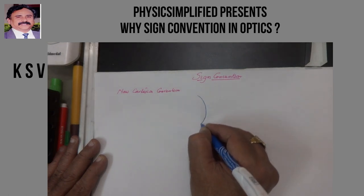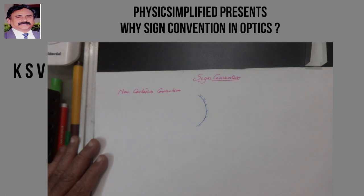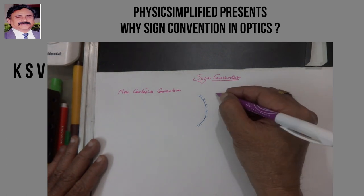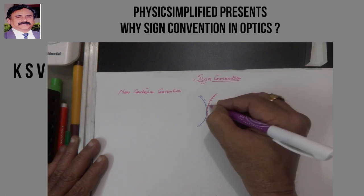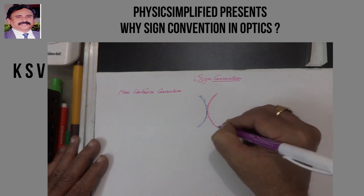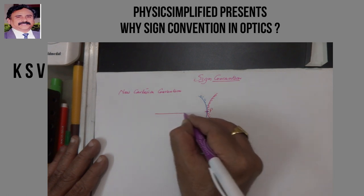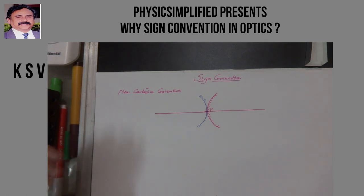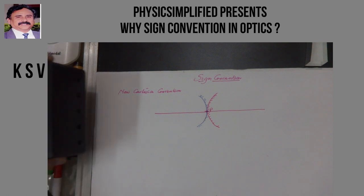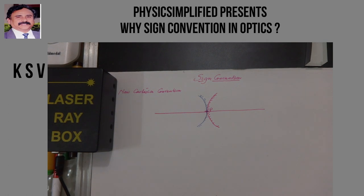This is a concave surface and this is a convex surface. The distances are to be taken from the pole. Suppose if the light is incident in one particular direction, then we have to take the direction of the light as positive.